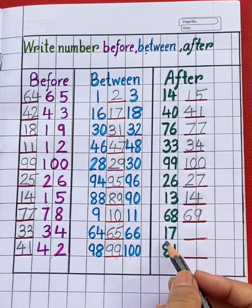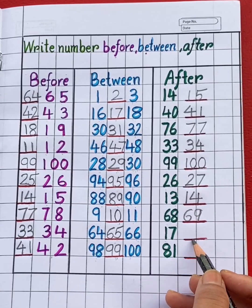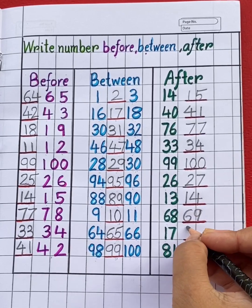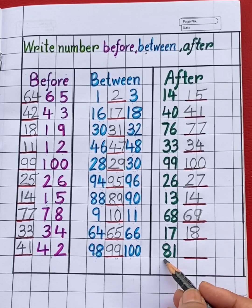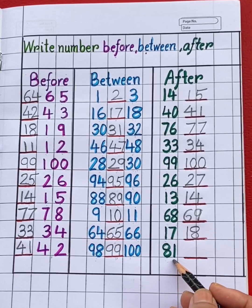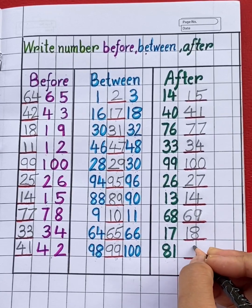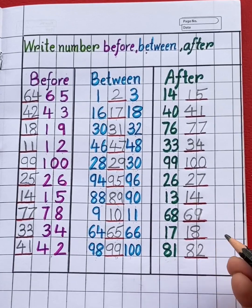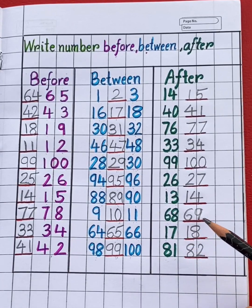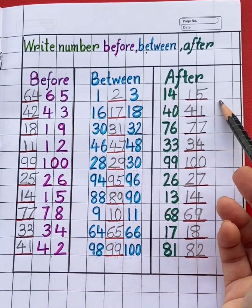Next number is 17. Which number will come after 17? Number 18. See the last number 81. Which number will come after 81? Number 82. So students, I hope you understood the concept of before, between, and after numbers.